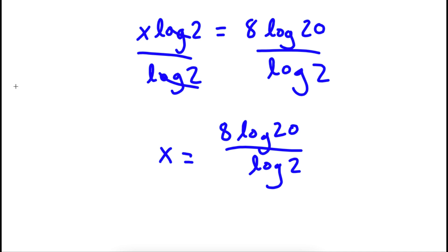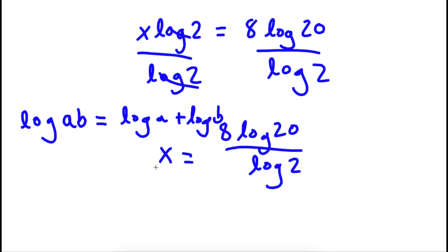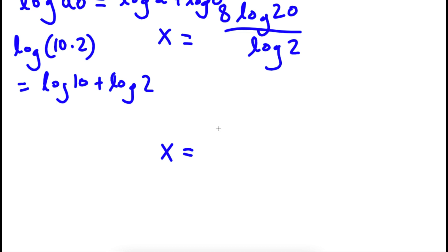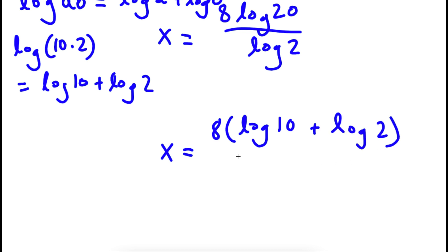Now, if I have something in the form log ab, this is equal to log a plus log b. So in this case, 20 we could rewrite as log 10 times 2, which would be equal to log 10 plus log 2. So now I have x is equal to 8 times (log 10 plus log 2) over log 2.